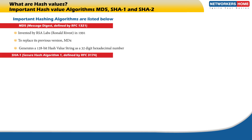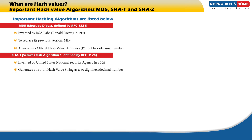SHA1, Secure Hash Algorithm 1, defined as RFC 3174, was invented by the United States National Security Agency in 1995. When data is fed to the SHA1 hashing algorithm, it generates a 160-bit hash value stream as a 40-digit hexadecimal number.